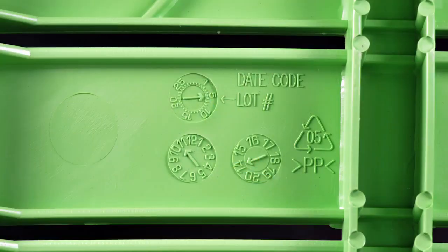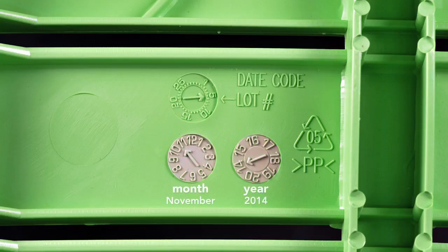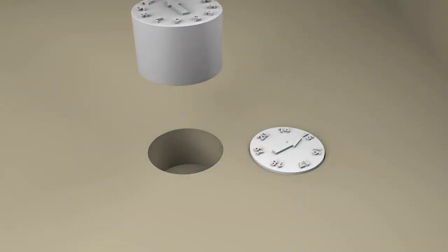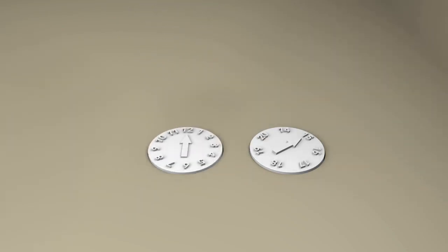Look around you and see how many injection molded objects you can find. Likely the device you're watching this on has injection molded parts. You should be able to find ejector pin witness marks and parting lines, but you may find something like this. It's a date wheel that shows the month and year the item was made. These are created by removable inserts and can be changed out for each run of the mold. They're very useful for tracking down defects.